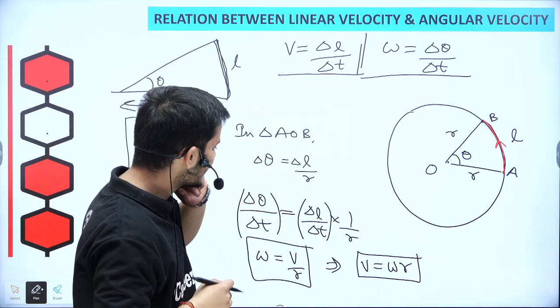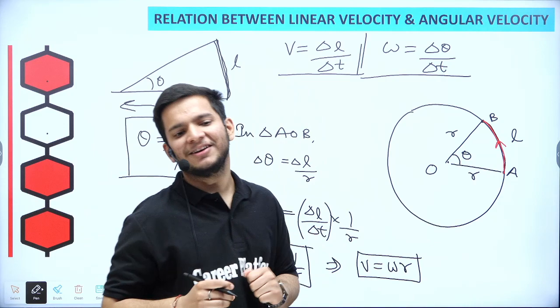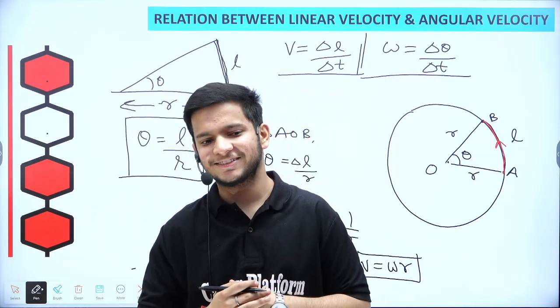Okay guys. So what happens? V equals to omega R, where V is the linear velocity and omega is the angular velocity. So this is it, guys. Thank you so much for joining. Thank you.